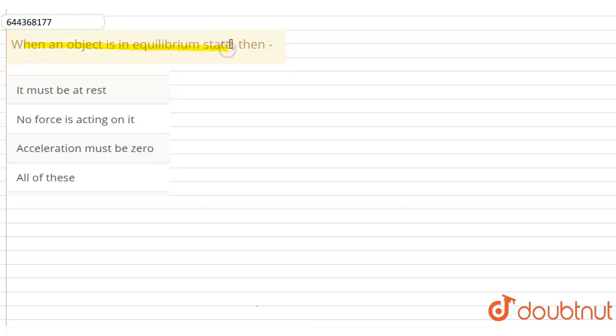So we have to check the options. Before going for the options, we have to know what is equilibrium state. Okay, so let me write here: if net force on any object is zero, then that object is in